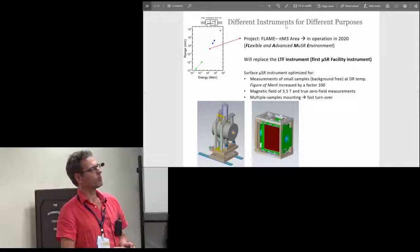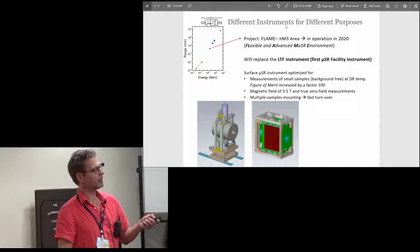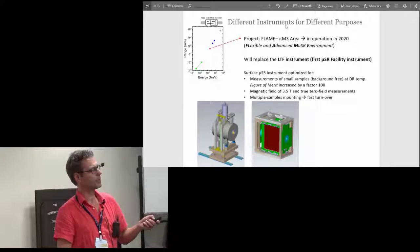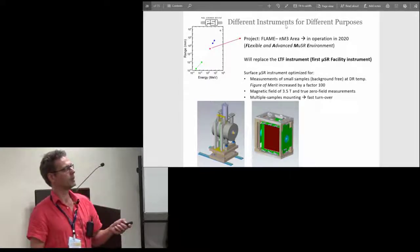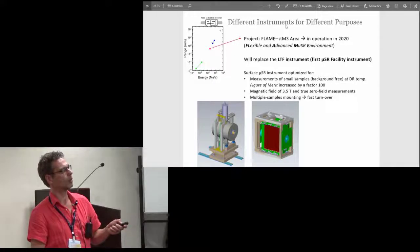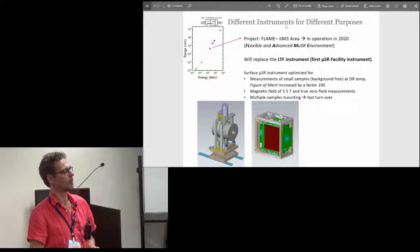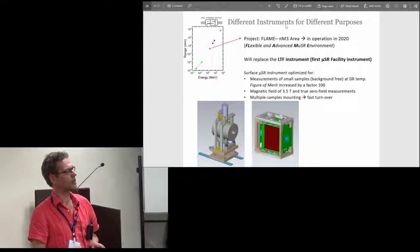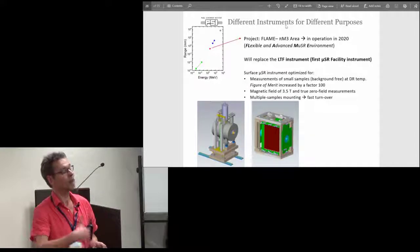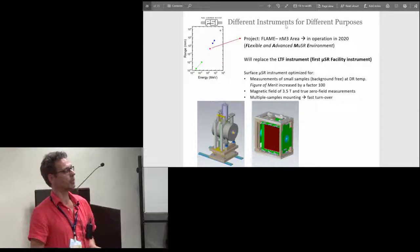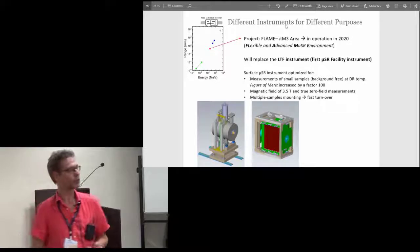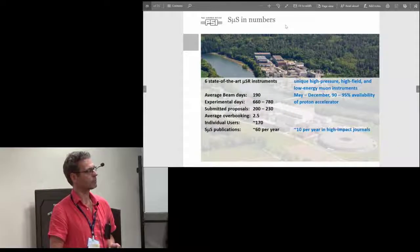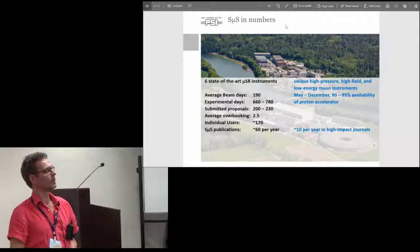There's a new instrument. It will replace an old one, the low temperature facility, which was actually the first muon facility instrument in the 1980s. This is now decommissioned and dismantled, and this new FLAME instrument should be in operation in 2020. It's also designed for having a smaller, faster sample change in a dilution refrigerator, to be able to go down to 10 millikelvin and have a relatively quick turnover from one experiment to the next one.